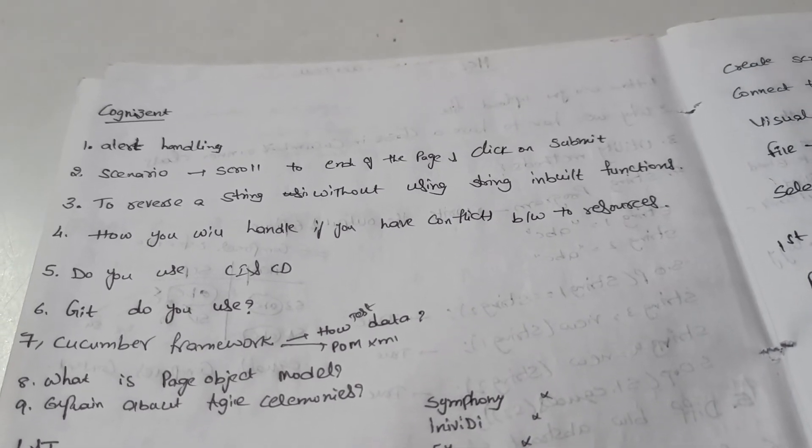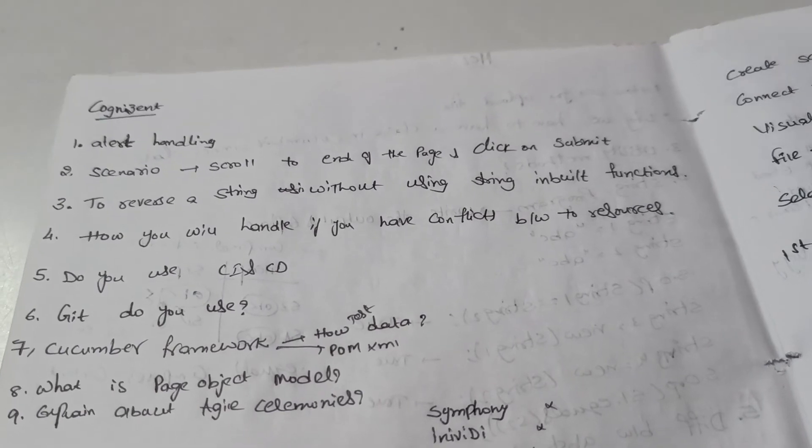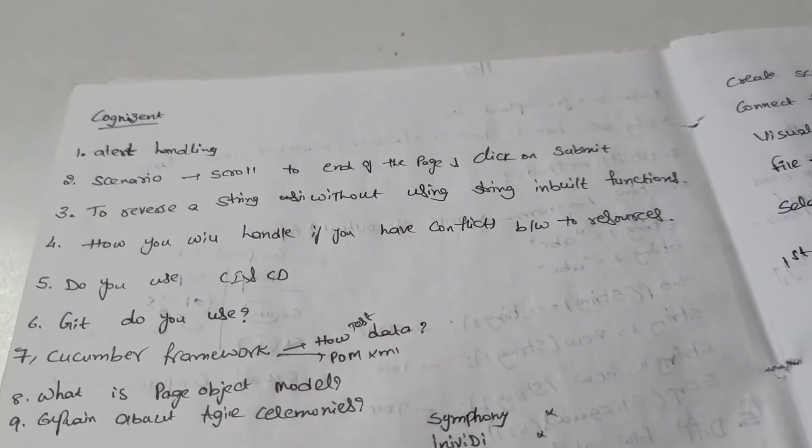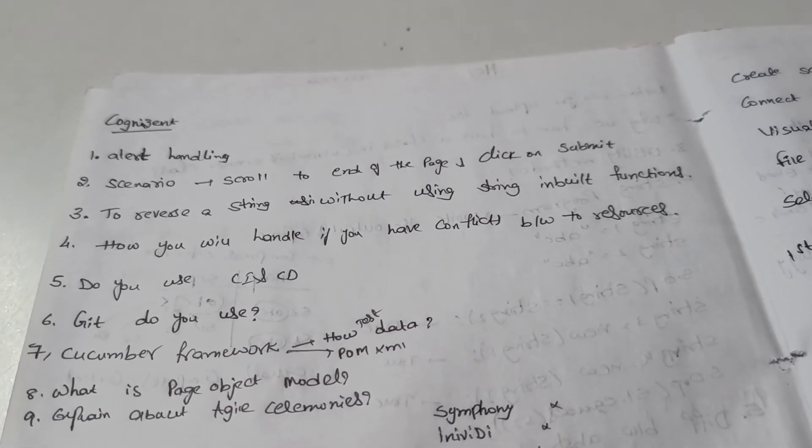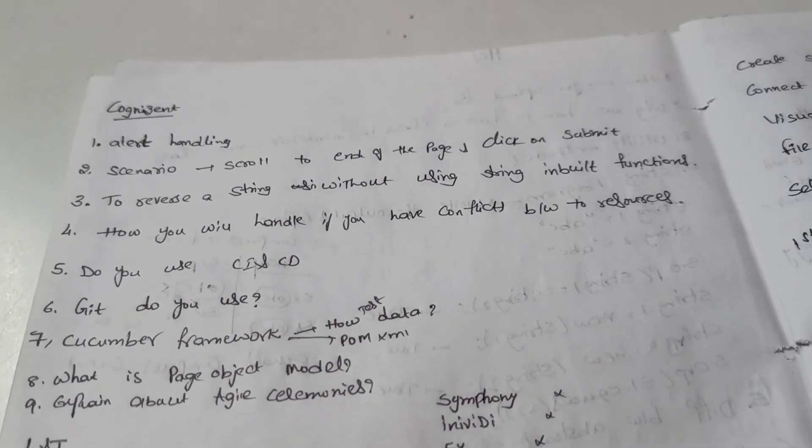The eighth question is what is page object model - we have to explain why we will use page object model. The ninth question is explain about Agile ceremonies.